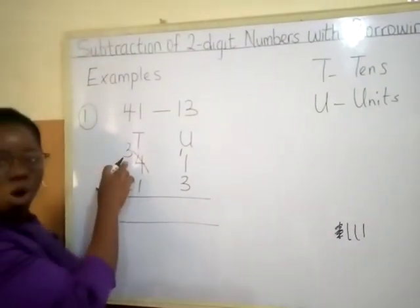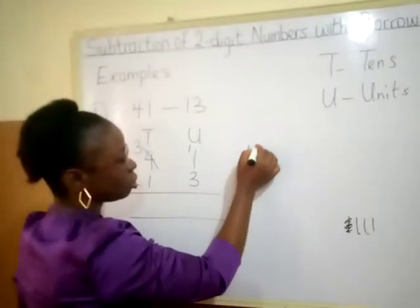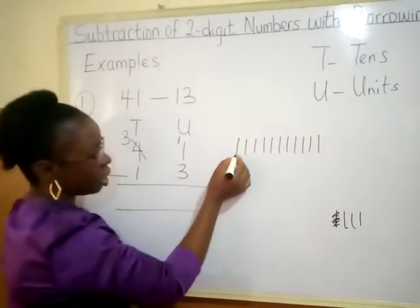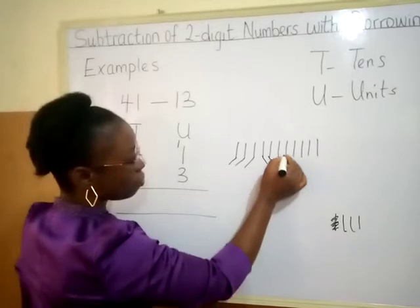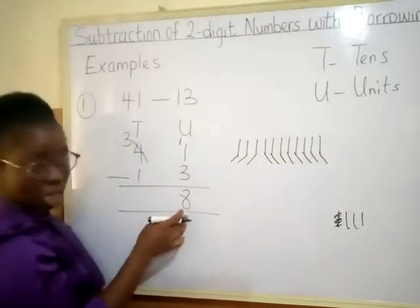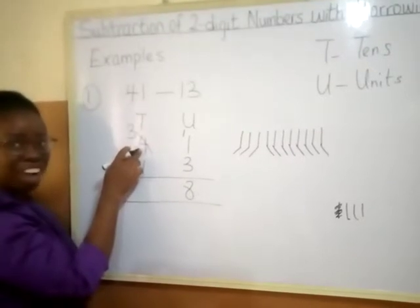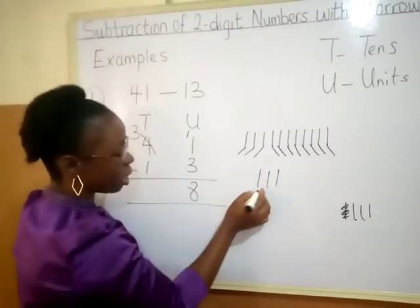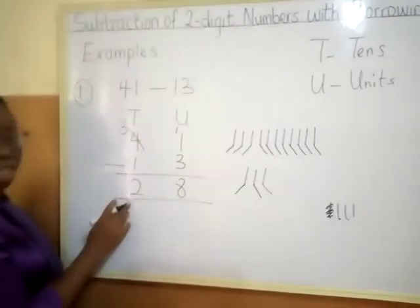Why do I have three? Because I borrowed one there. So I will count 11, take away three. Eleven minus three gives me eight. Then go to the tens. I told you this one will not be four again because we have borrowed there — it will be three. Three take away one: count the remaining, which gives two. So therefore, 41 minus 13 will give me 28.